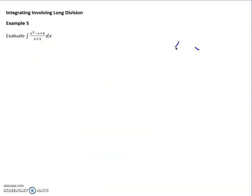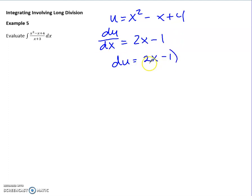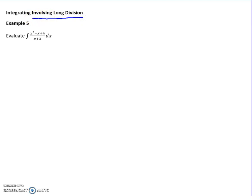In the last example, letting the bottom be u gives a derivative of 1, which causes problems since the top still has extra terms. Letting the top be u gives du = (2x − 1) dx, but substituting leaves terms that can't easily be replaced. Both u-substitution attempts fail. As noted at the start, we'll use long division to simplify the expression into something we can integrate.